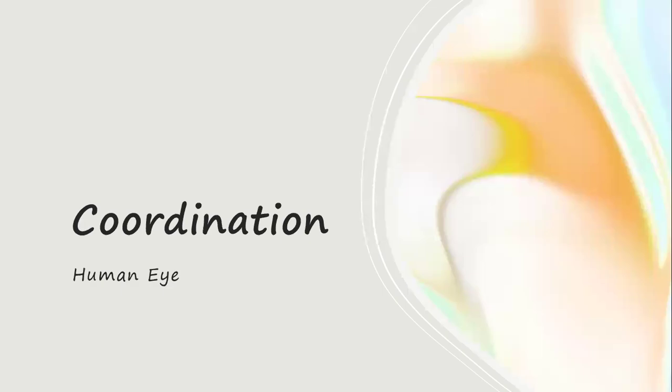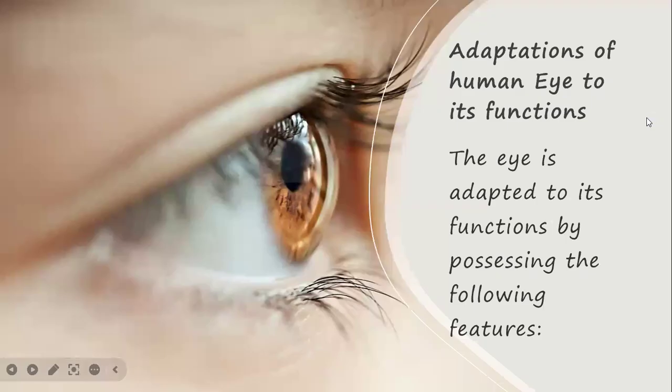Hello everyone, welcome to this session. The chapter is coordination, and we're still discussing the human eye. So far in our previous video, we saw the human eye, its structure, and various parts of the internal human eye. Today let's move on to the various adaptations of the human eye to its functions.